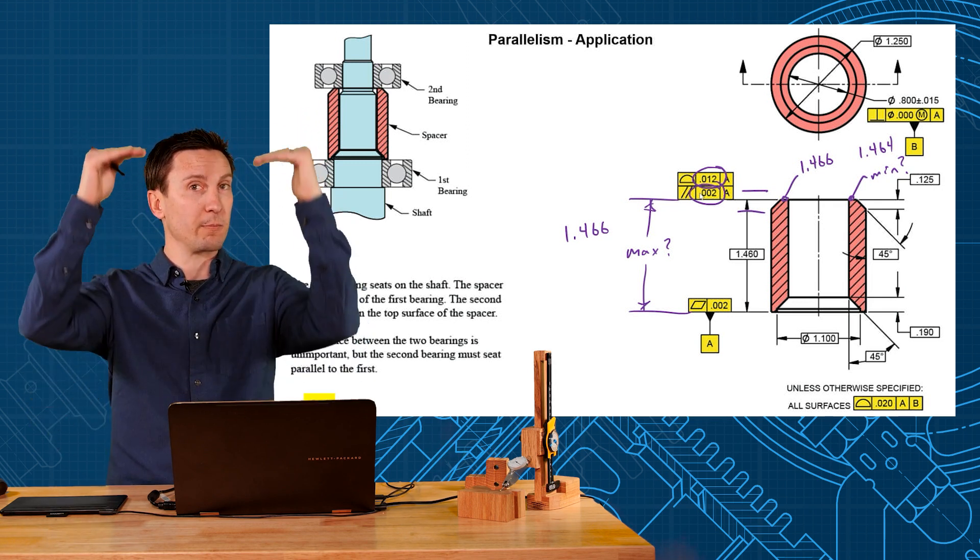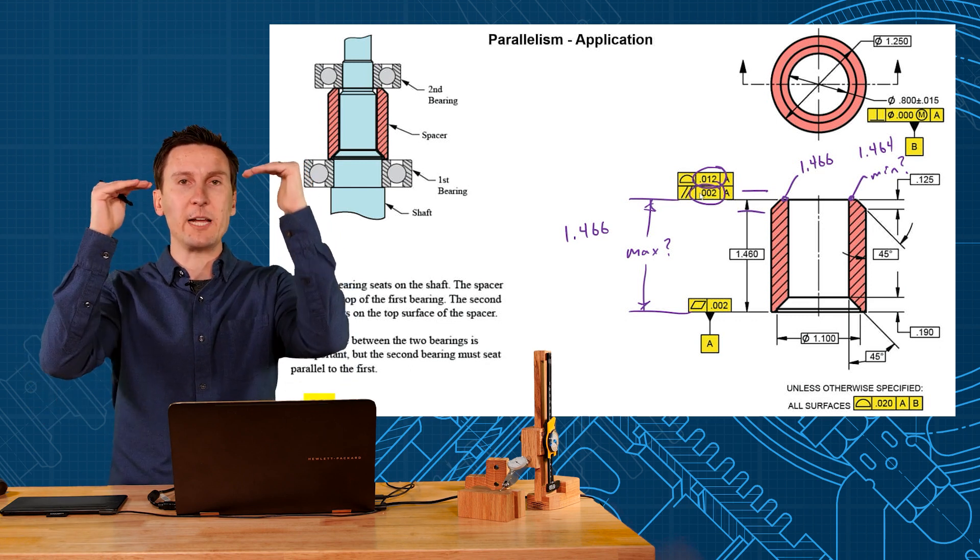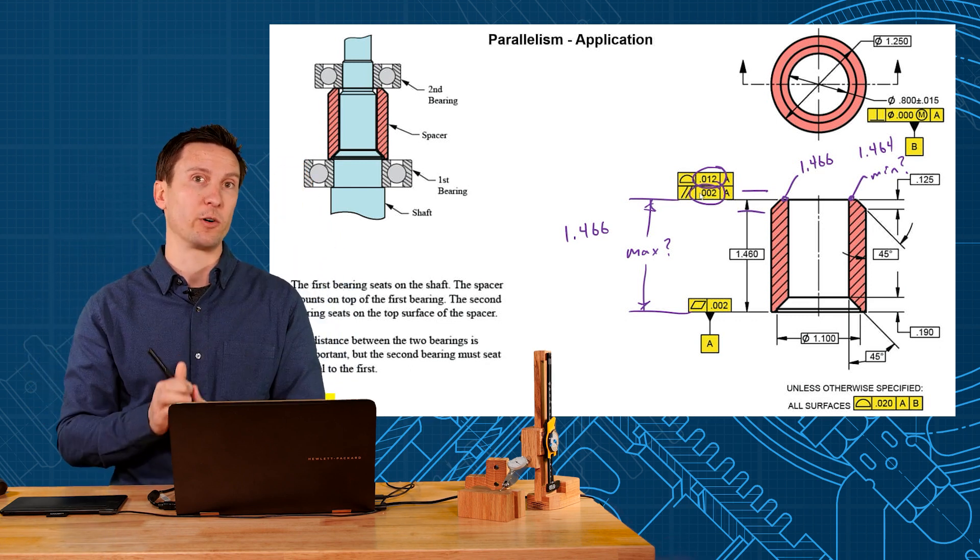You could be high, you could be low, set by the larger profile tolerance. The parallelism is a refinement that could refine the orientation of that feature.